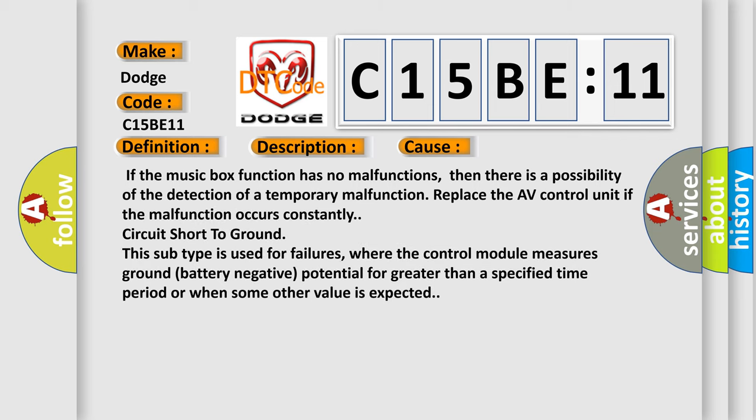If the music box function has no malfunctions, then there is a possibility of the detection of a temporary malfunction. Replace the AV control unit if the malfunction occurs constantly. Circuit short to ground: this subtype is used for failures where the control module measures ground battery negative potential for greater than a specified time period or when some other value is expected.